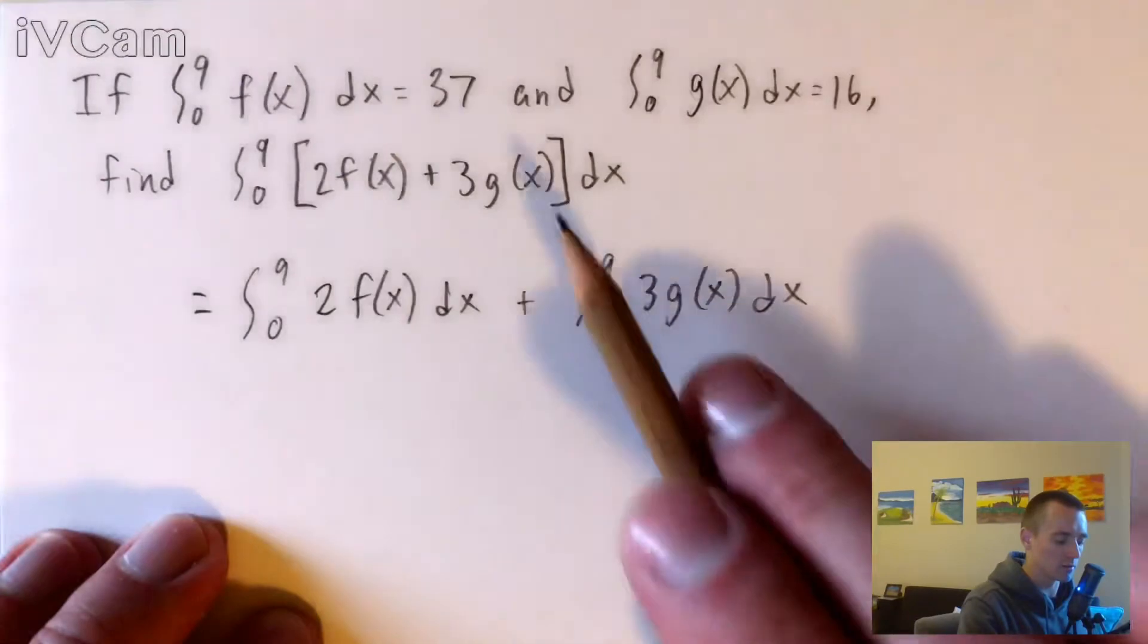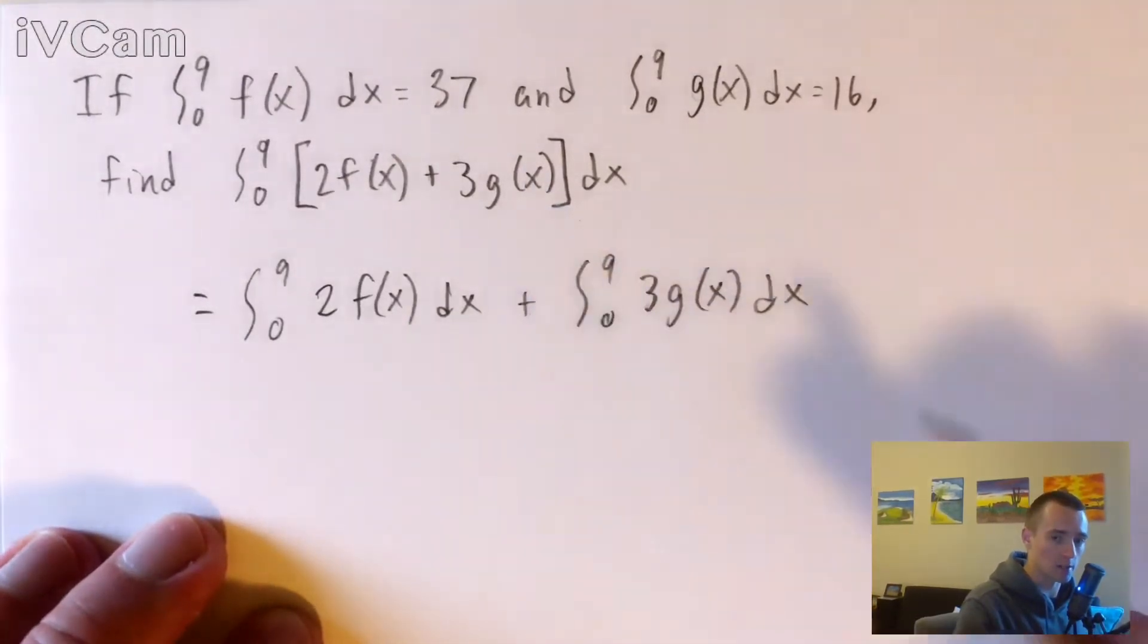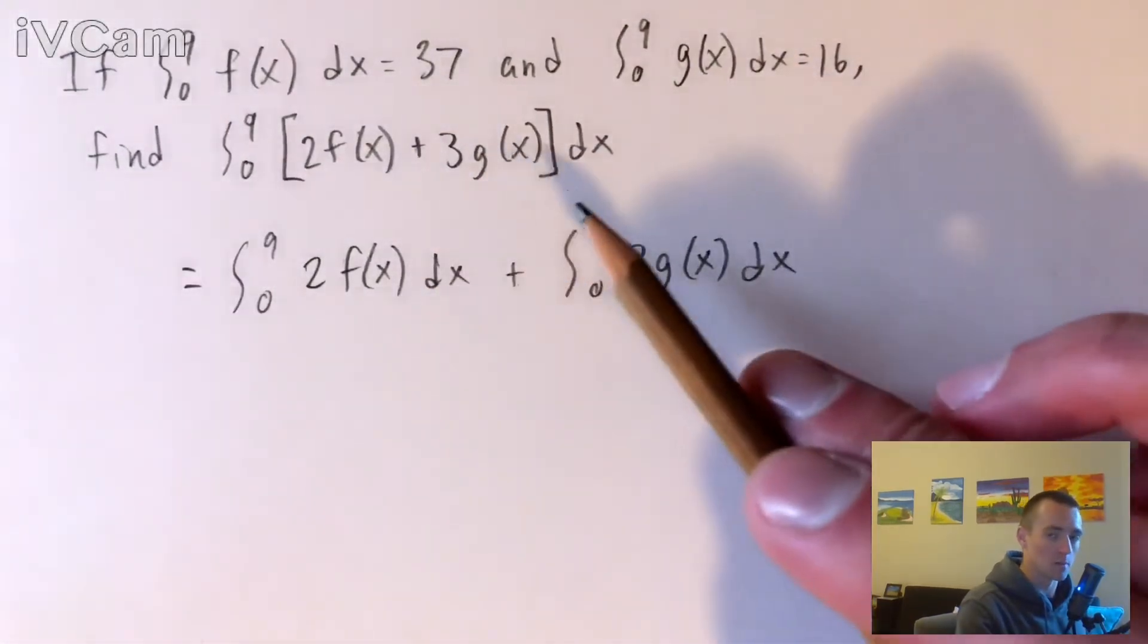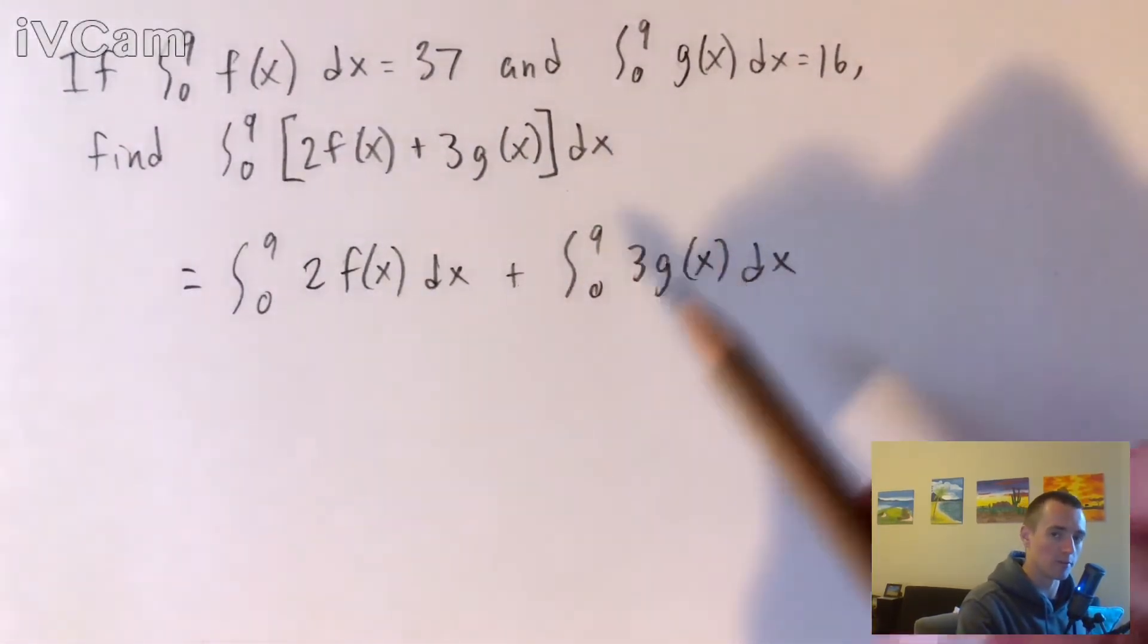So this is gonna be equivalent to what we were trying to find here. And that's just using the property that says we can split up the sum, split up an integral of a sum this way. Basically the integral of a sum is the same as the sum of the integrals.